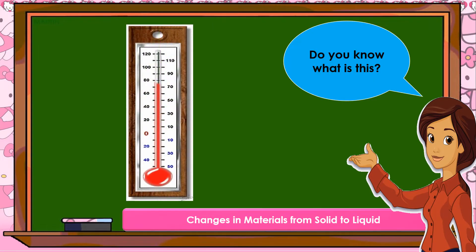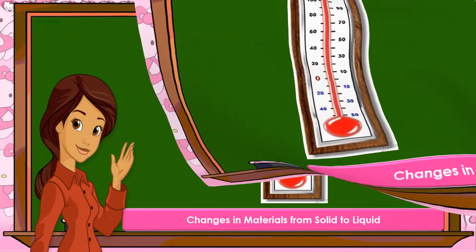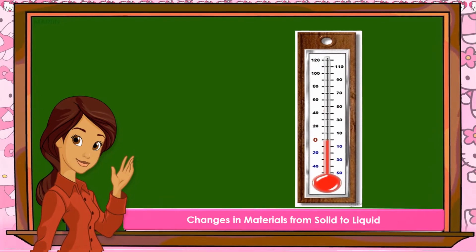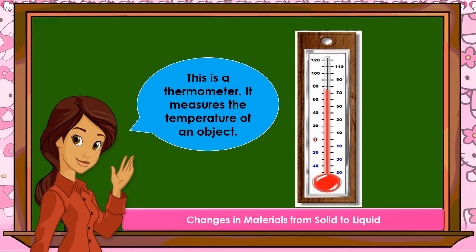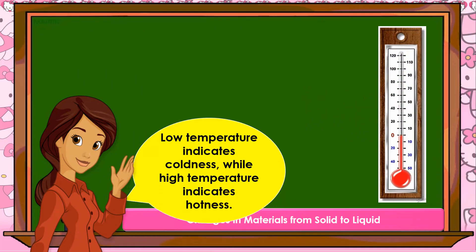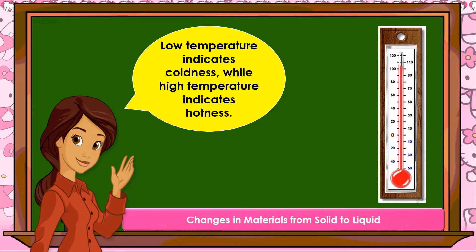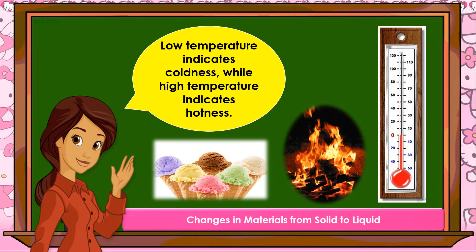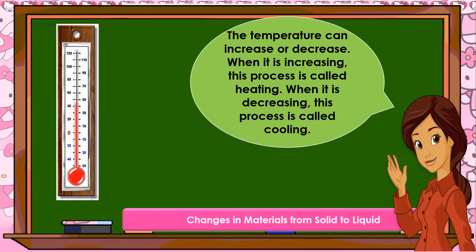Do you know what this is? Right! A thermometer. This is a thermometer. It measures the temperature of an object. Low temperature indicates coolness, while high temperature indicates hotness. The temperature can increase or decrease. When it is increasing, this process is called heating. When it is decreasing, this process is called cooling.